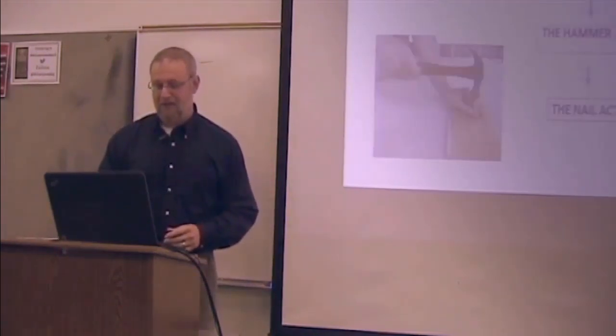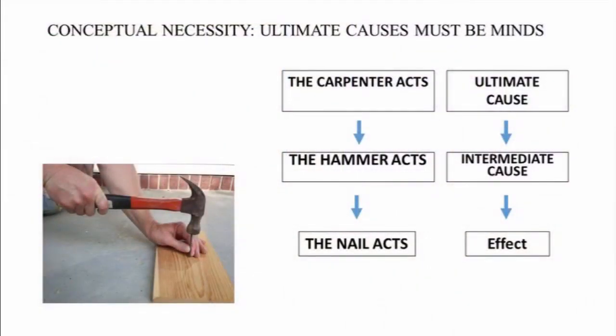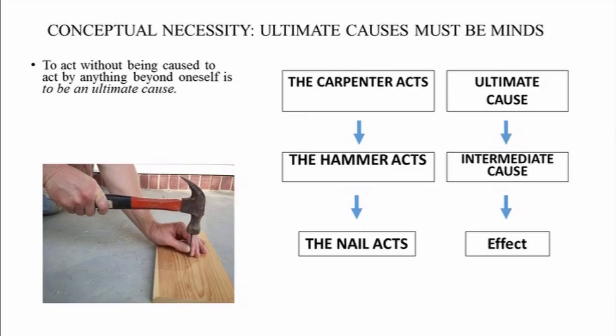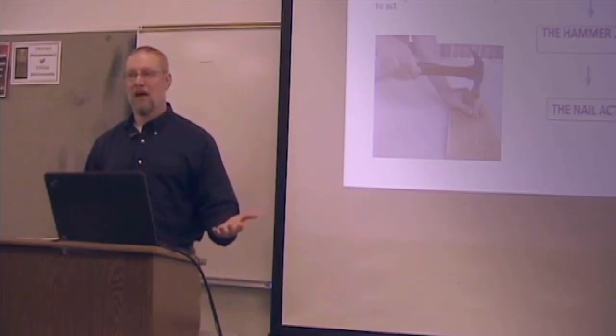Now this leads us to a conceptual necessity. Ultimate causes must be minds of necessity. By definition, that's what they are. To act without being caused to act by anything beyond oneself, that is to be an ultimate cause. That's the definition of an ultimate cause and that is conceptually indistinguishable from choosing to act. So to be an ultimate cause is to choose to act is to be a mind.